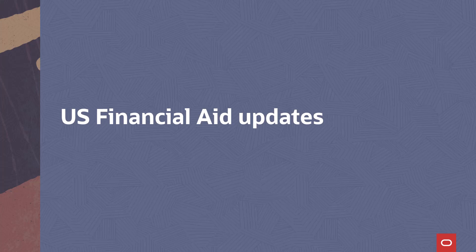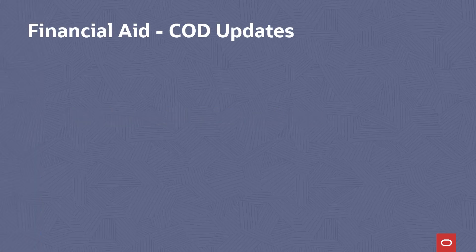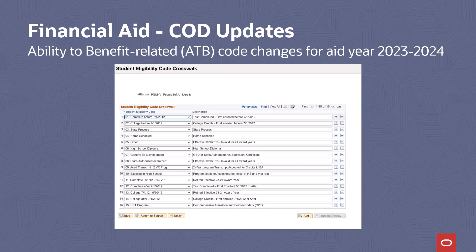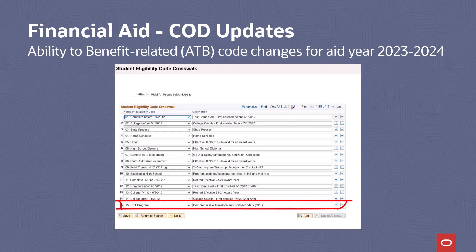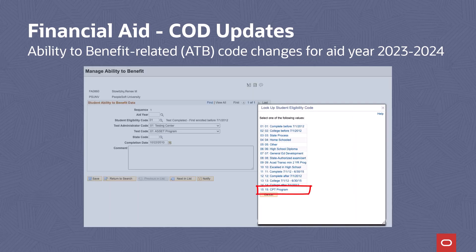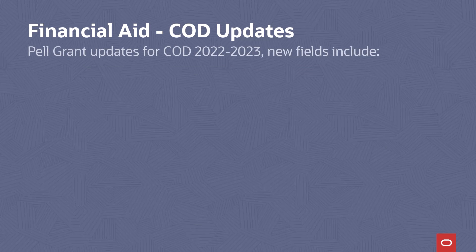US financial aid including COD, federal methodology, and direct lending updates. Starting with general COD updates, we've delivered the ability to benefit related code changes for aid year 23-24. The changes include new translate values for student eligibility code 15 and ATB test code 13. We modified and added new message catalog entries, made application package PeopleCode changes, as well as modifications to ATB and validation COBOL programs.